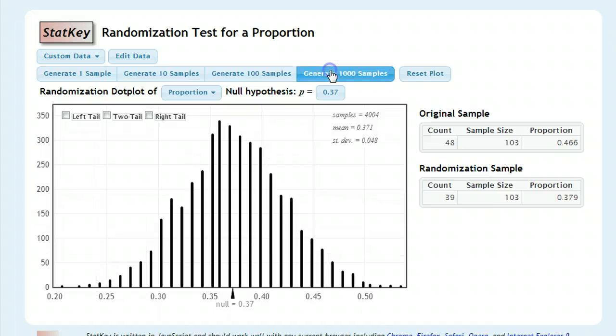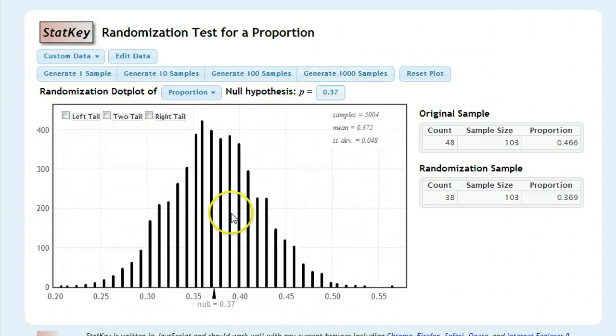And unlike the confidence intervals, where the curve is centered around our sample proportion, 0.466, the curve is going to be sampled around our null hypothesis. The computer will automatically shift the data to be around the null, so that we can get a better sense of what different values are unlikely. And we'll talk about why that matters later.